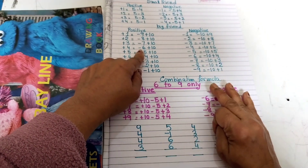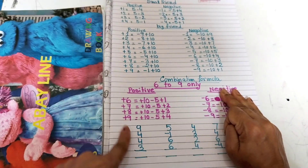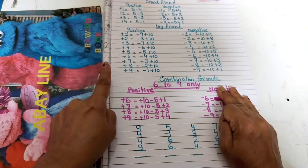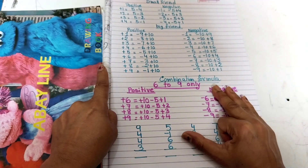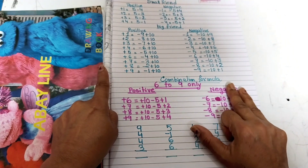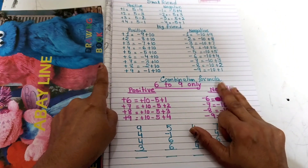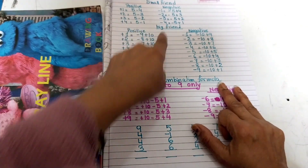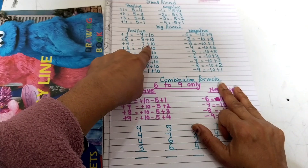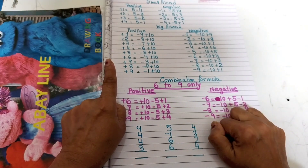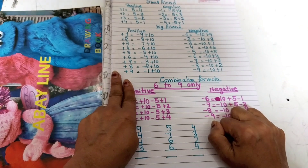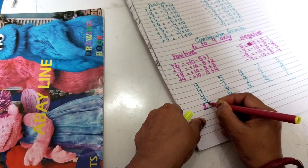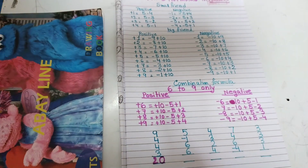Plus 4 big friend: minus 6 plus 10. Next plus 4 again: plus 5 minus 1. Then plus 3 — there is no 3 base, and 5 is already up, so I go to the big friend: 3 equals minus 7 plus 10. The answer is 20.